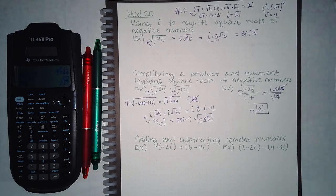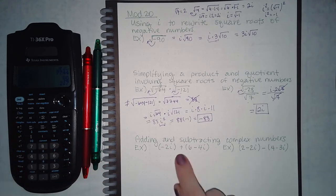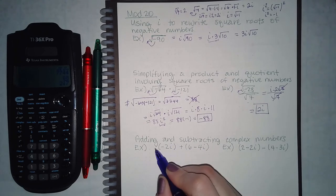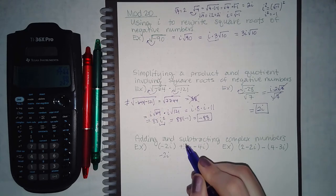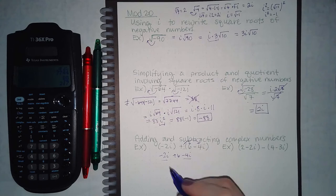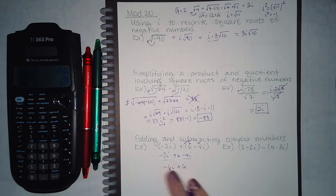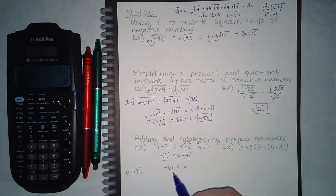Now we're adding and subtracting complex numbers. Essentially, you eliminate the parentheses by distributing and then combining like terms — real parts with real parts, imaginary parts with imaginary parts. For the first problem, there's no coefficient or exponent on the parentheses, so you can just drop them. For the next, distributing the plus 1 gives positive 6 and negative 4i. Combining like terms gives negative 6i plus 6, but the formal way to write a complex number is real part first, then imaginary, so the correct form is 6 minus 6i.